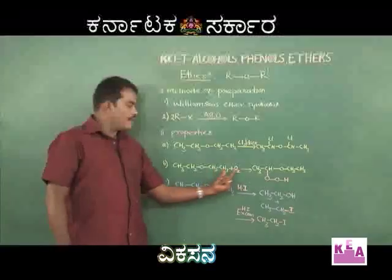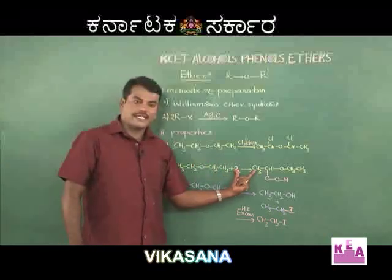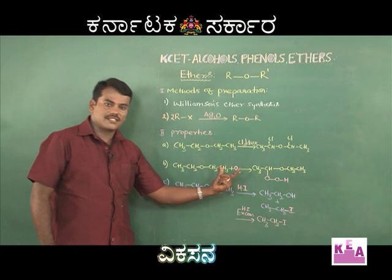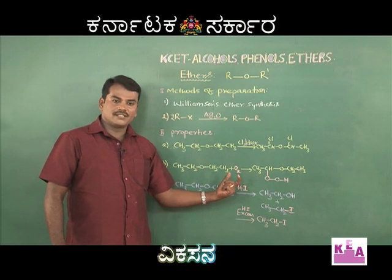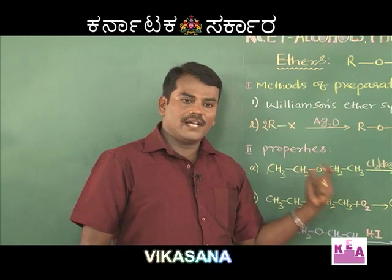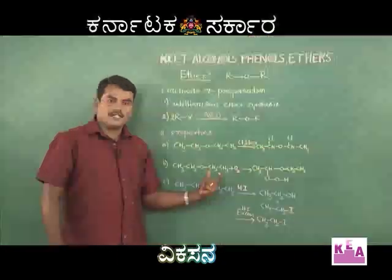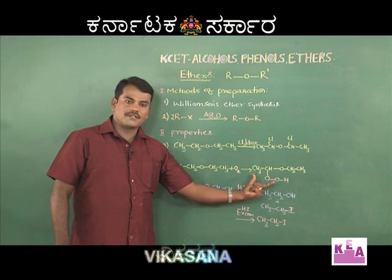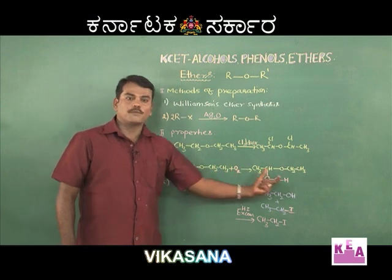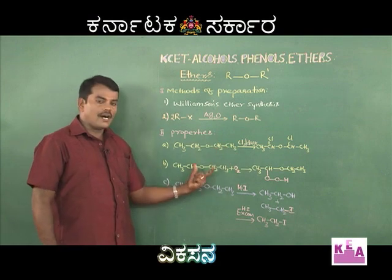The second property is the reaction with oxygen. When ethers are exposed to air or oxygen, they form peroxides, which are generally explosive. Therefore, while distilling ether during purification, you must first remove any peroxide formed before distilling. Otherwise, it may lead to an explosion. The formation of peroxides is responsible for the explosion hazard of ethers.